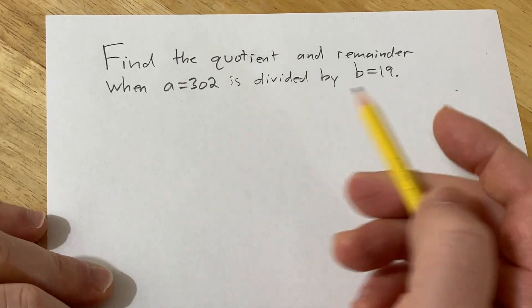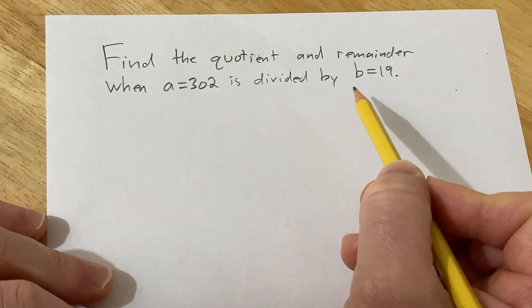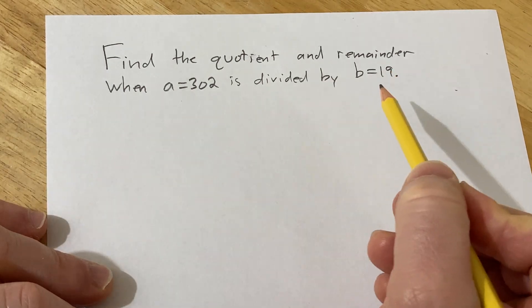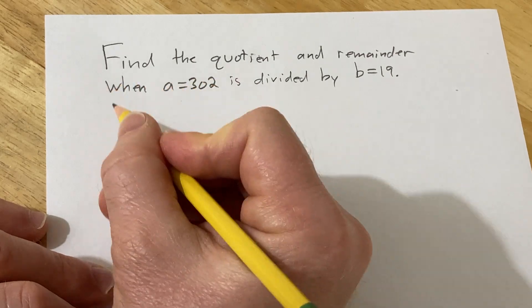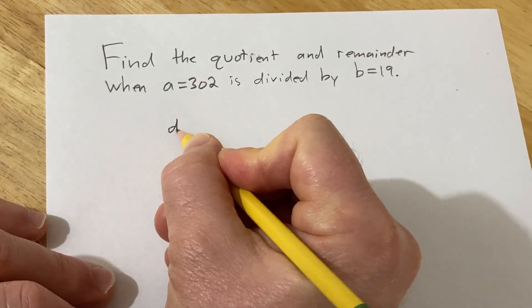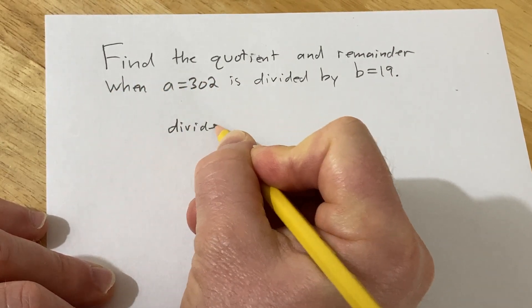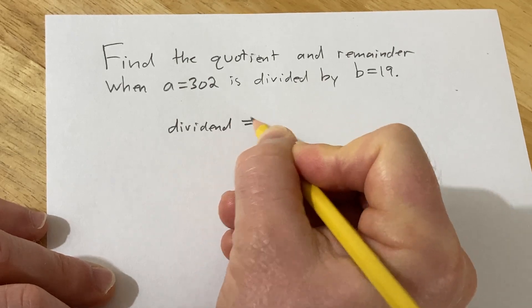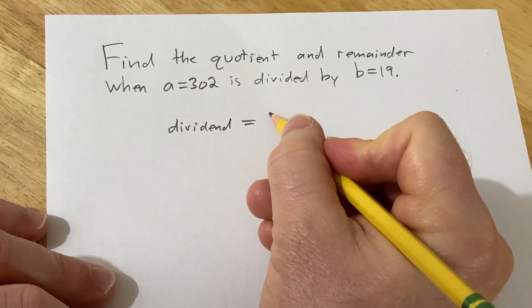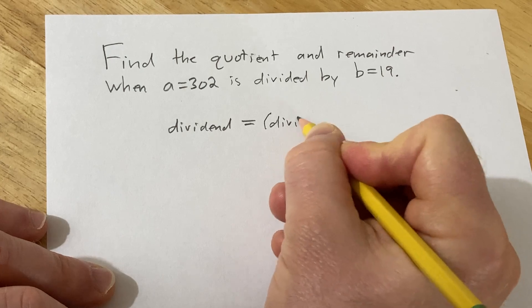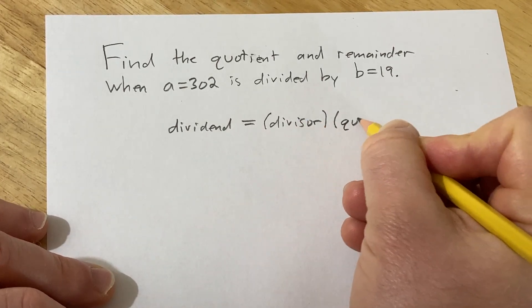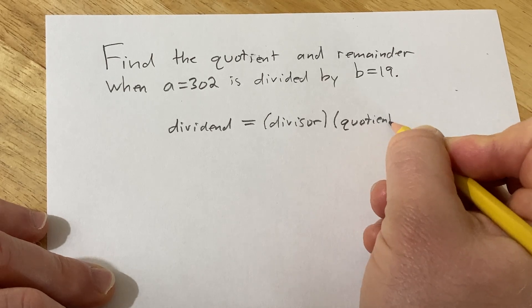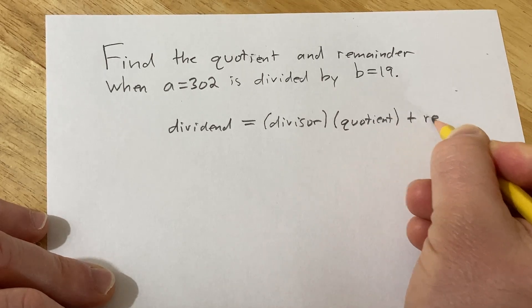Find the quotient and remainder when a = 302 is divided by b = 19. In general, when you use division, your final answer is going to look like this: the dividend, which in this case is 302, equals the divisor times the quotient plus the remainder.